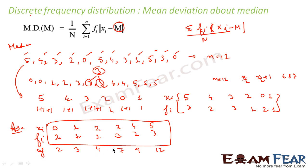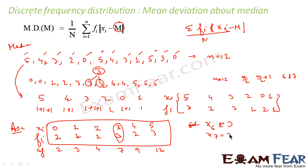We can see that up to x=2 the cumulative frequency is 4, and up to x=3 it is 7. So the 5th, 6th, and 7th terms all fall in the x=3 group. From the table we can confirm that both the 6th and 7th values are 3.